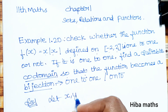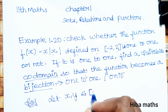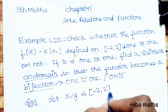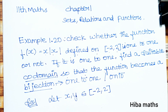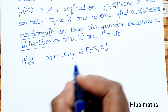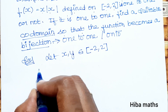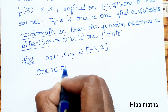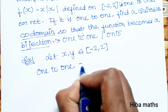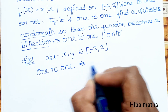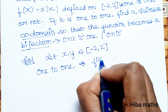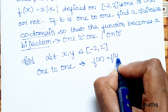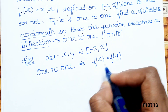So let x, y be elements of [-2, 2]. For the 1 to 1 condition, we apply: if f(x) is equal to f(y), then we check the condition.